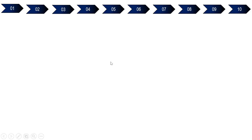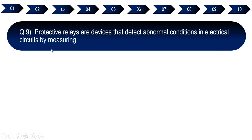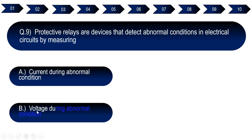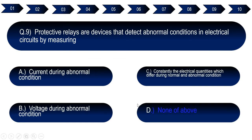Question number nine: A protective relay is a device that detects abnormal conditions in electrical circuitry by measuring. Option A: current during abnormal conditions. Option B: voltage during abnormal conditions. Option C: constantly the electrical quantities which differ during normal and abnormal conditions. Option D: none of the above. The right answer is option C — constantly the electrical quantities which differ during normal and abnormal conditions.